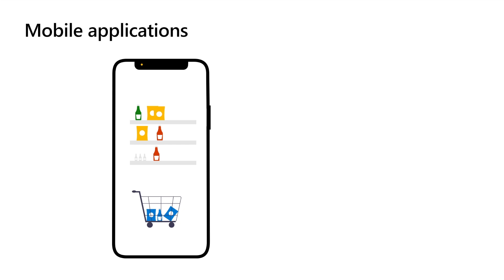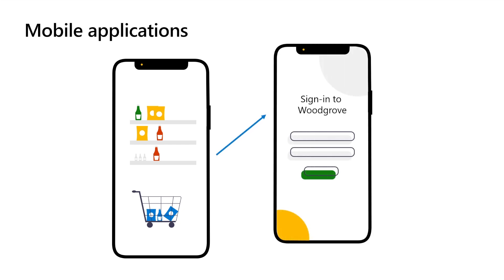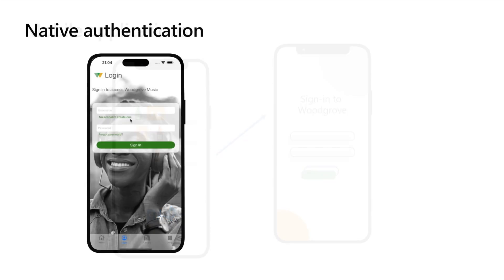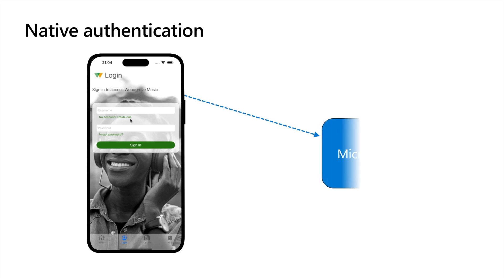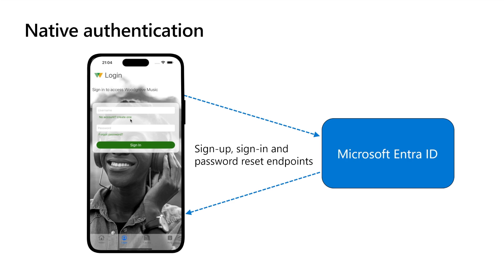Mobile and desktop apps are installed on the user's device. Sign-in is done in a pop-up system web browser or WebView. For mobile applications, you can also utilize the new native authentication feature, which allows app developers to host the sign-up, sign-in, and password reset UI elements in the app, and use native authentication APIs or SDK to sign up or sign in users without any pop-up windows.